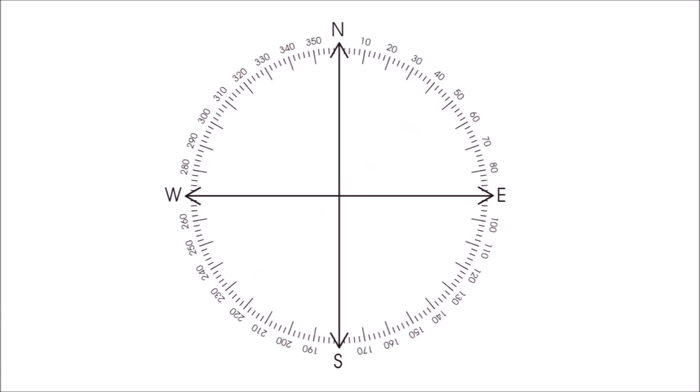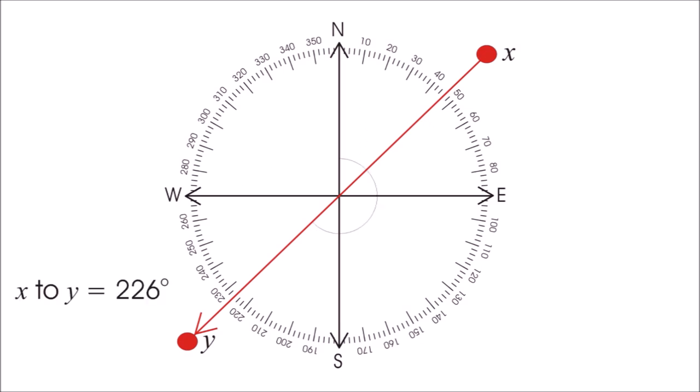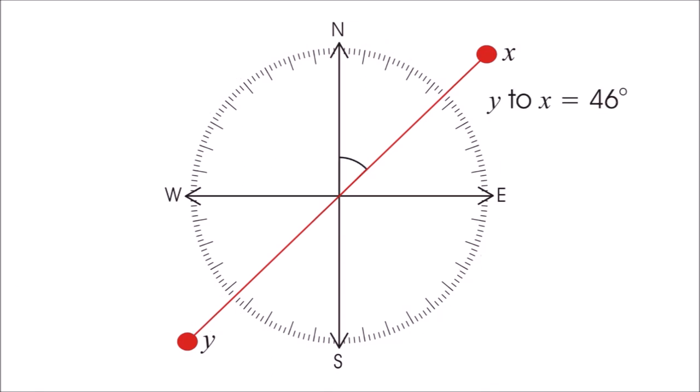In the civilian world, we don't divide the compass into two halves. We use the whole circle of 360 degrees and use the angle from north to the direction of whatever we're looking at or want to travel. So going from X to Y would be 226 degrees — from north, you rotate 226 degrees. From Y to X it would be 46 degrees. We always rotate from the north, whereas the military can rotate from either north or south.